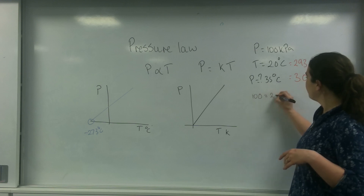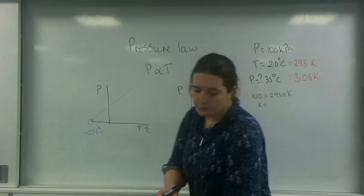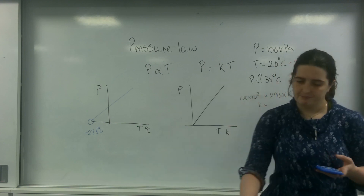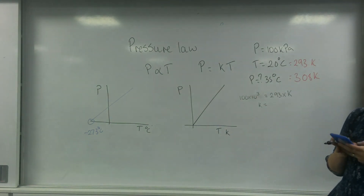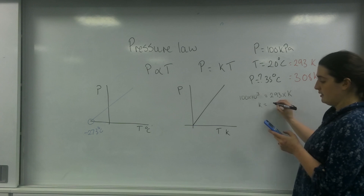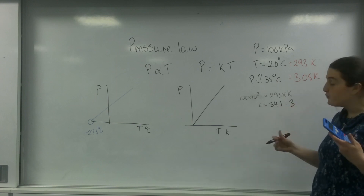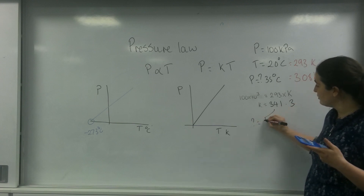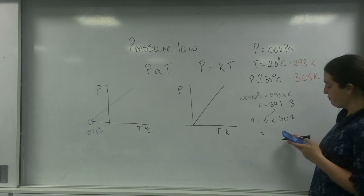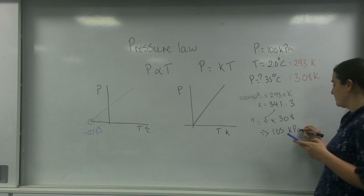Using the directly proportional formula now that I have the temperatures in Kelvin: 100 equals the constant times 293. That constant equals 100 times 10 to the 3, divided by 293, so the constant is 341.3. This same constant applies in my next formula, so the new pressure equals 341.3 times the new temperature of 308 Kelvin. My new pressure is approximately 105 kilopascals.